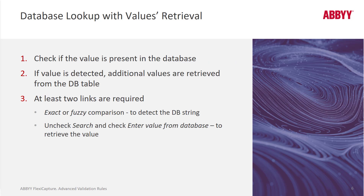You can also do what some people call reverse database lookup — value retrieval where you match either a single key or multiple keys, and then bring in other data from that row of the database. For example, with school administrators: if a student fills out their student ID on a form that we're going to OCR, we can do a lookup on their database and pull in their address, teacher, and any information they have, and populate that into a FlexiCapture form.